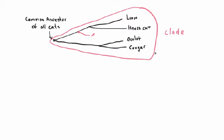A clade is united by a common ancestor; it includes all the descendants of the common ancestor and nothing else. Another term frequently deployed in discussions of cladistics or clade-based evolutionary phylogeny is 'monophyletic,' meaning a single family — a single clade — that represents the taxon Felidae. So the family Felidae would be a clade, a monophyletic taxon.